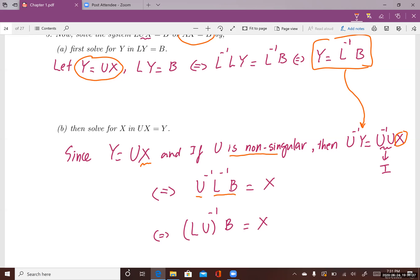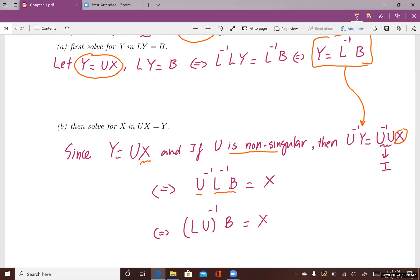If I want to combine these two matrices together, it's going to be (LU) inverse times B is a solution for this system of linear equations. You might wonder why people are interested in knowing whether a square matrix can be factored into L and U.